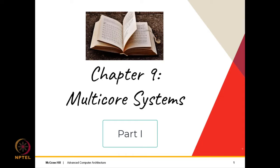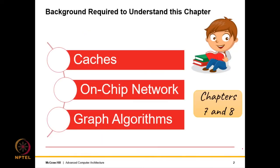This is by far the longest chapter in the book and also by far the most complex. But we will break it down into very simple sub-chapters and discuss each one in great detail. This chapter combines everything we have learned up till now — it combines pipelines, caches, the on-chip network, and also requires knowledge of basic data structures, namely graph algorithms.